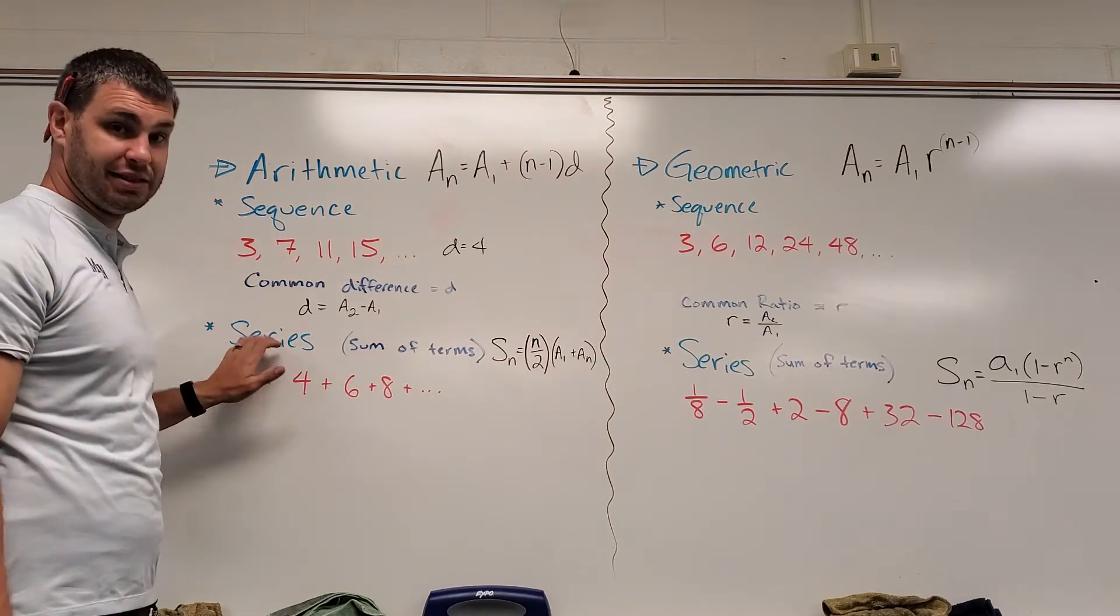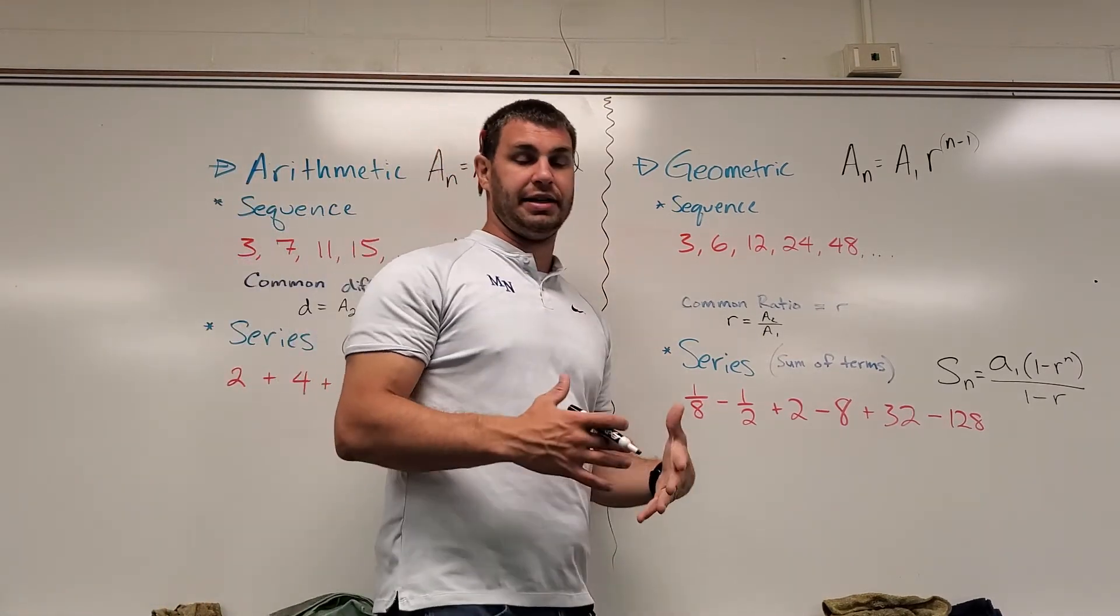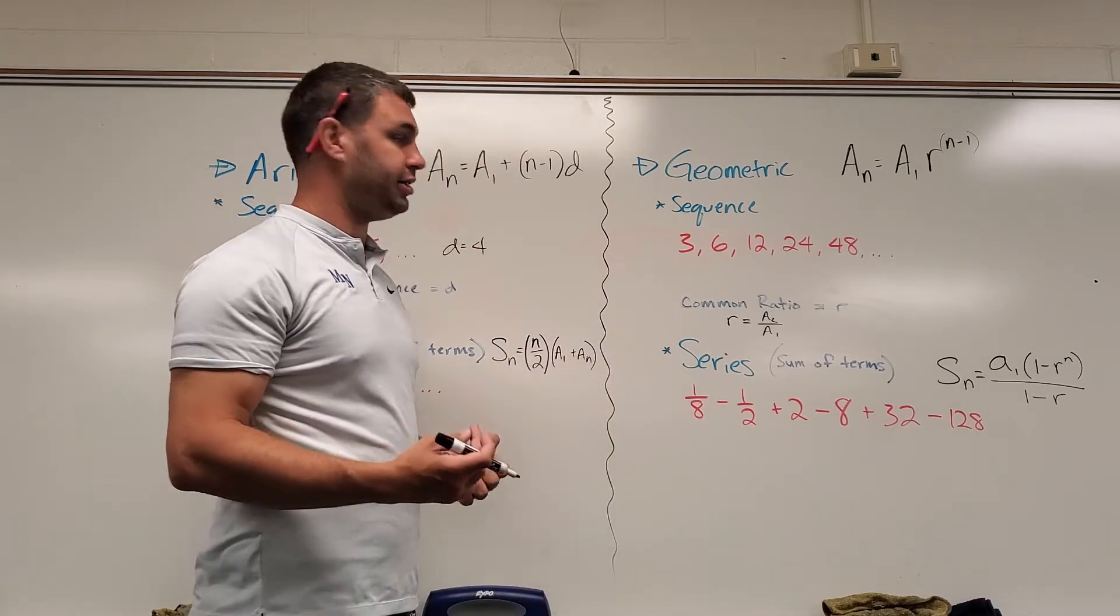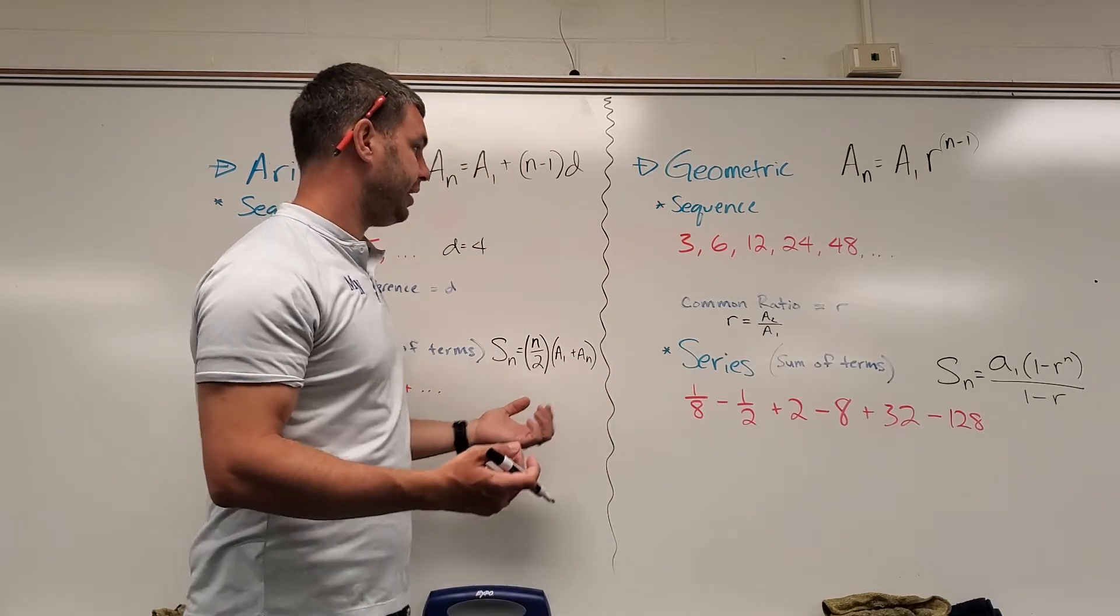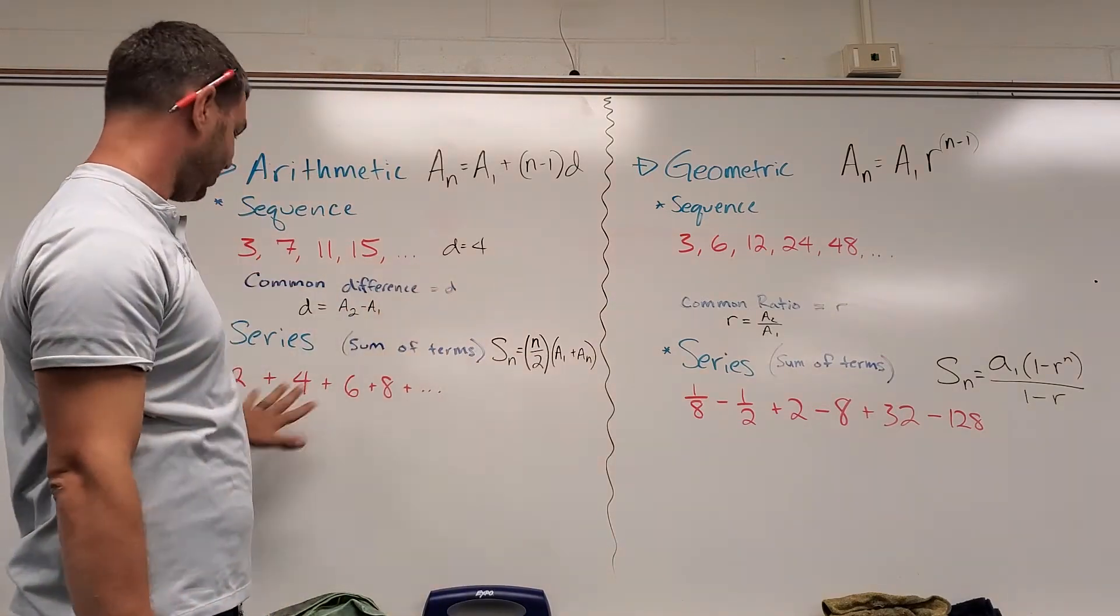Geometric is similar, but it has a common ratio, which means that I need to multiply. So instead of adding like over here—I added 4 each time—here I'm multiplying by something.